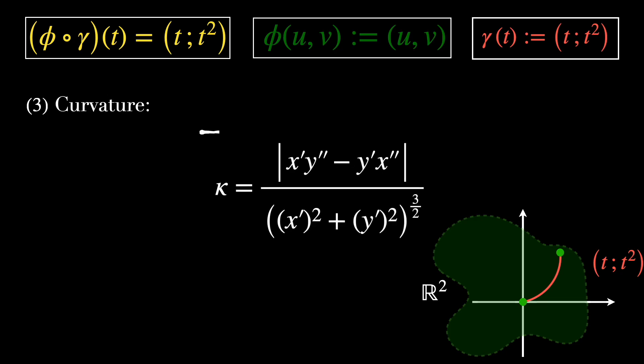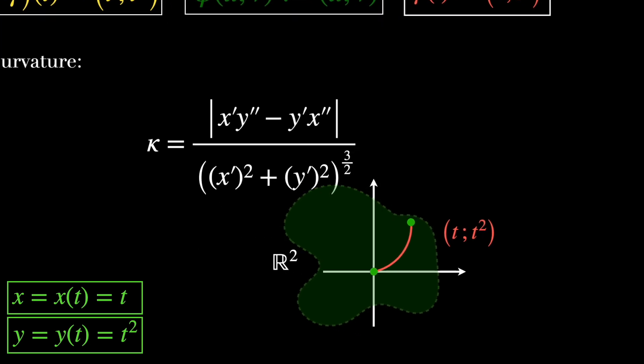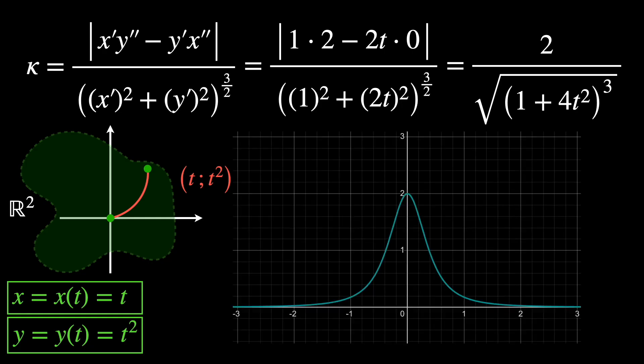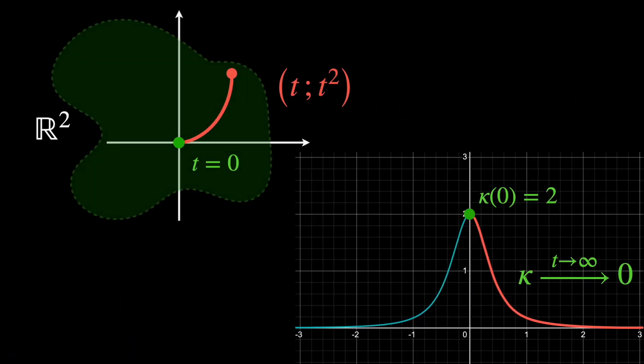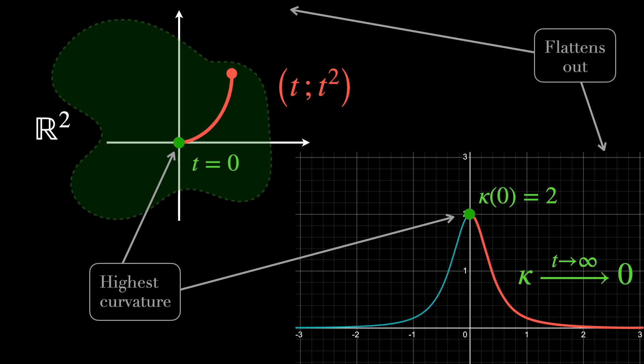Third, curvature. To find the curvature kappa of the path T, T squared in R2, we use this formula, where x is T and y is T squared. Let's calculate it. This curvature describes how sharply the curve T, T squared bends at each point in R2. When T tends to 0, kappa of 0 is 2, which implies that the curvature is highest at the start. When T tends to infinity, kappa tends to 0, which implies that the curve flattens out as it moves farther from the origin.